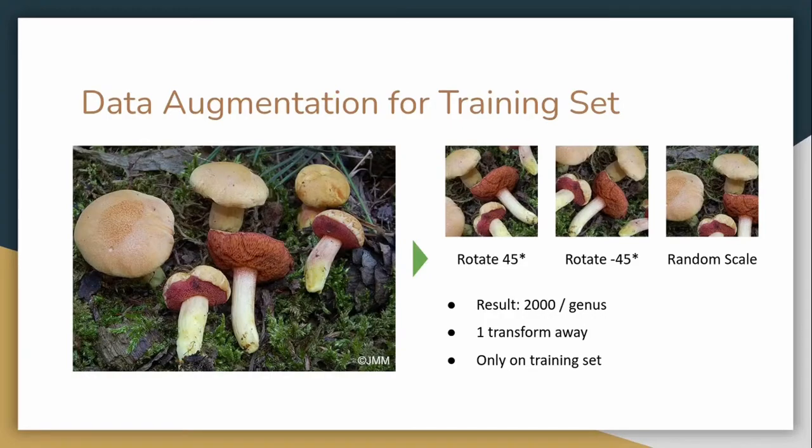In the end, we acquired 2000 examples for each genus, each image at most one transform away from either the processed original or the actual original. Note that we split the dataset prior to augmentation, so only the training set contains augmented images.